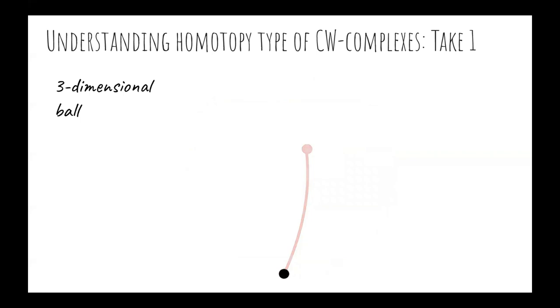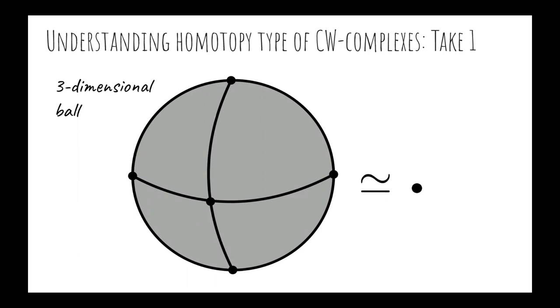Every step of this process preserves the homotopy type of the original complex. So, we have proved that this CW structure of a ball can be simplified to a point without changing the homotopy type. In particular, we proved that it's contractible.